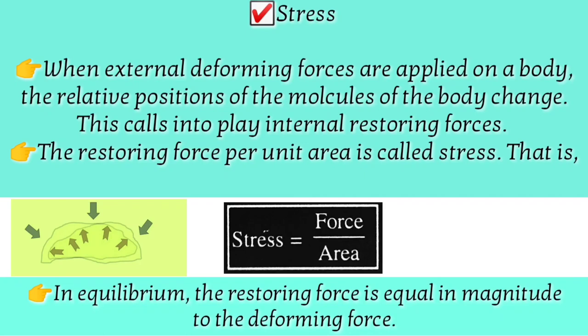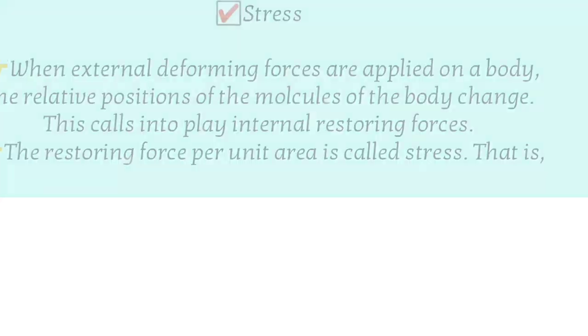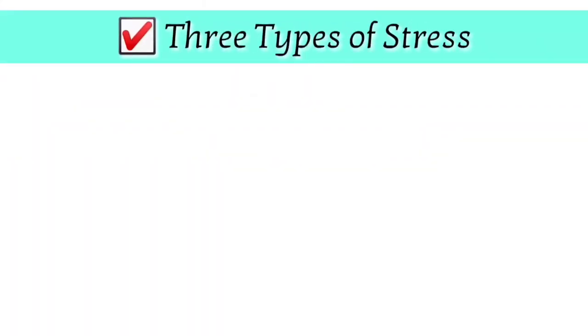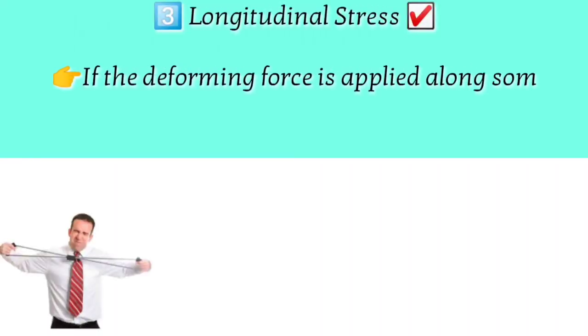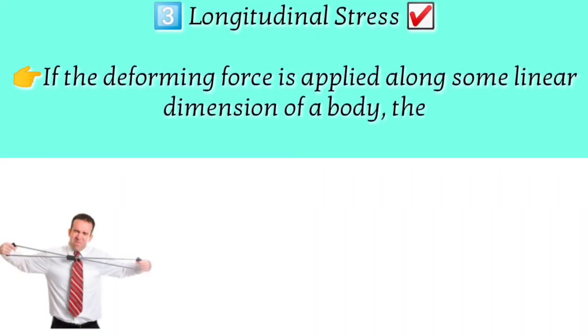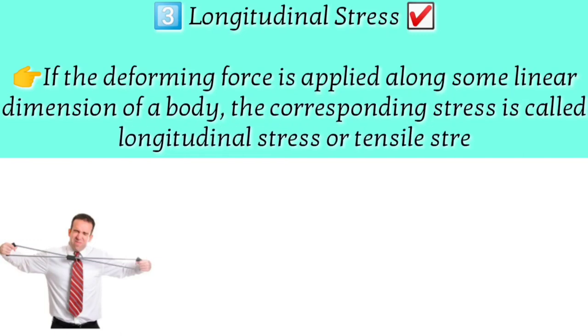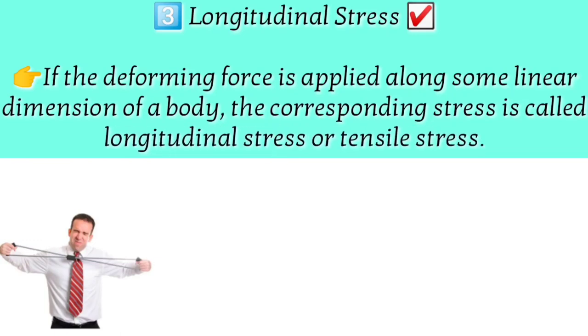There are three types of stress: longitudinal stress, volumetric stress, and shear stress. Longitudinal stress occurs when the deforming force is applied along some linear dimension of a body. The corresponding stress is called longitudinal stress. Longitudinal stress is of two types: tensile stress and compressive stress.